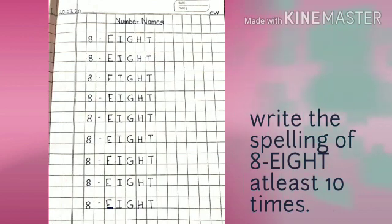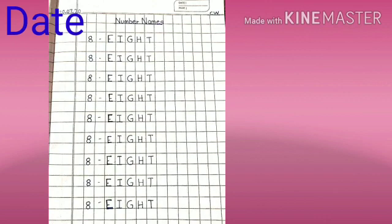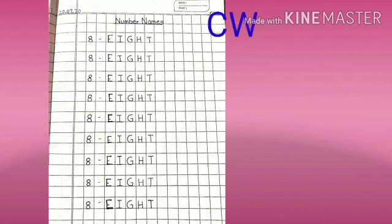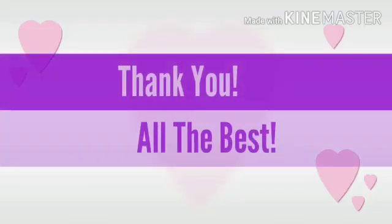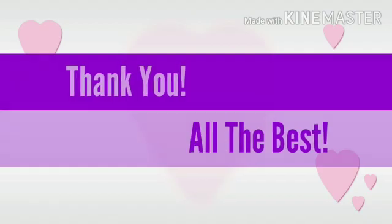Now write the spelling of 8 at least 10 times so you will learn better and fast. Also mention the date and CW on top of the page. Thank you, students — all the best!